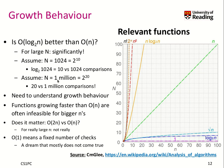Even worse: take n to be 1 million, which is 2 to the power of 20. That means you need only 20 comparisons with binary search compared to 1 million comparisons with the array search. So that clearly makes a difference.